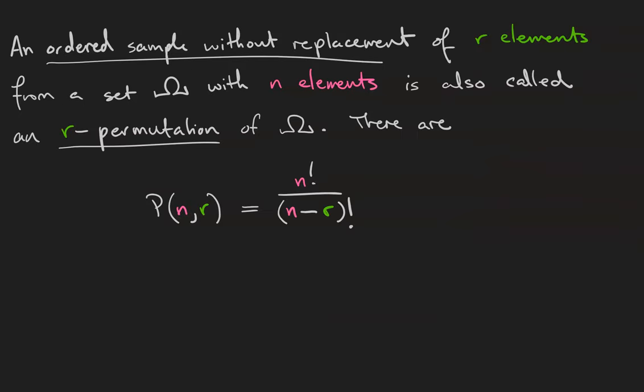That leads us to our definition. An ordered sample without replacement of r elements from a set with n elements is also called an r-permutation of that set. There are n factorial divided by n minus r factorial such r-permutations. And we read that number as n permute r.